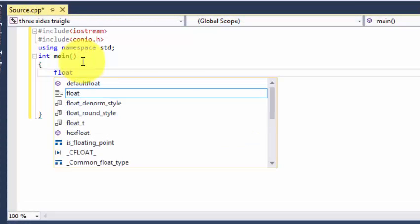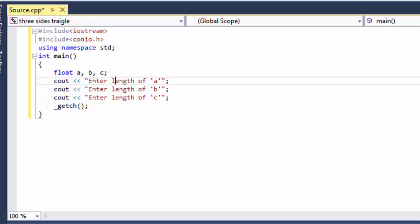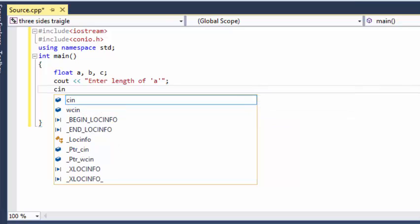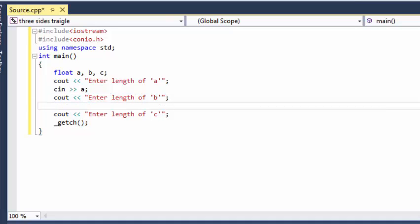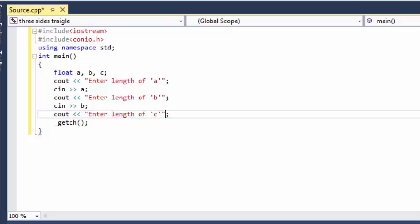We need the data type float because there are some values which are in decimal point, so that's why we need float. While we are writing these, we are getting the length of three sides. We are asking the user to enter the three side lengths, so then we will be able to calculate the area.